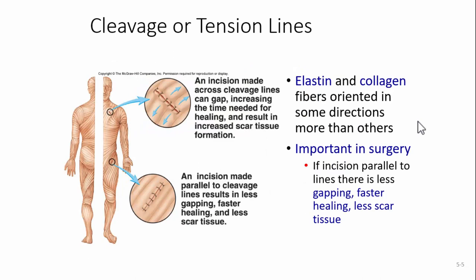Talking about cleavage retention lines — elastin and collagen fibers are oriented in some directions more than others, and this is important especially in surgery. If an incision is parallel to the lines, there's going to be less gapping, faster healing, and less scar tissue. If we go across those lines, we've got all this elastic tissue and collagen pulling away from that cut, and it causes it to gap. If it gaps, the body has to fill in those gaps with scar tissue, so you're more likely to get scar tissue.